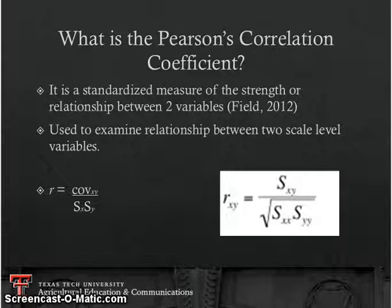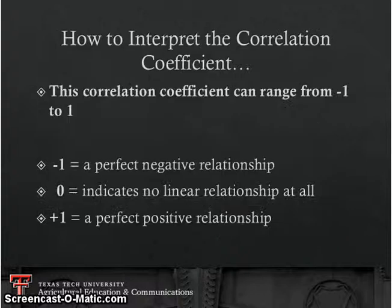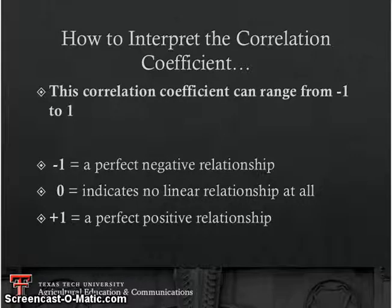That gives us the correlation coefficient. The importance of it being standardized is that the coefficient will fall within the range of negative 1 and positive 1. If you end up with something outside of negative 1 to positive 1, you've done something totally wrong. Since it's standardized, it should always fall into that continuum.